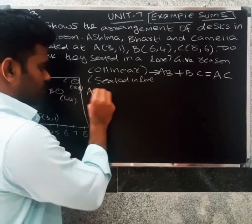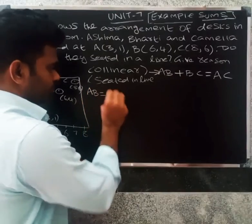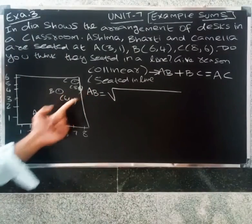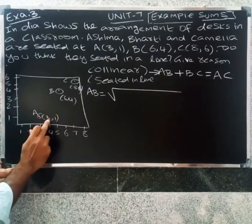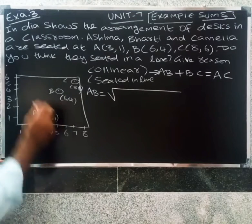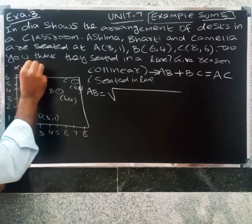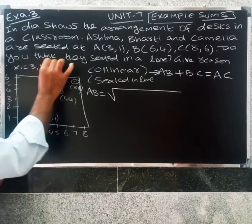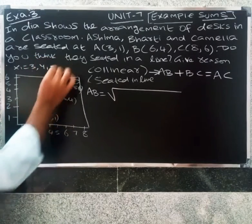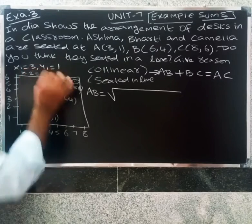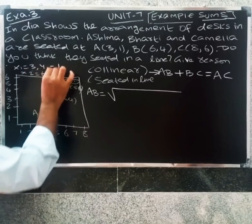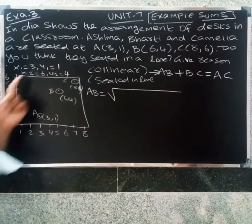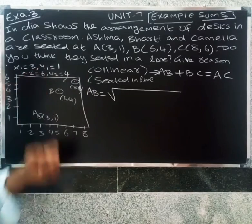For AB, we take A as (x1, y1) and B as (x2, y2). So x1 equal to 3, y1 equal to 1, x2 equal to 6, y2 equal to 4. Now let's calculate the distance AB using the distance formula.